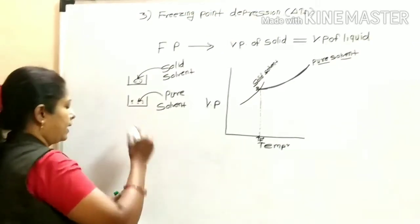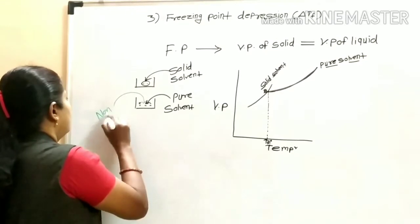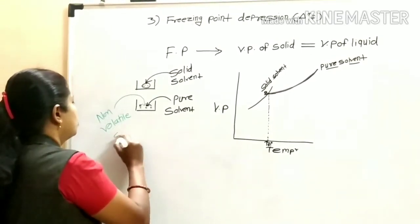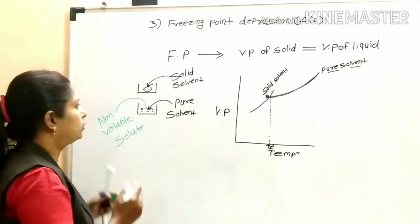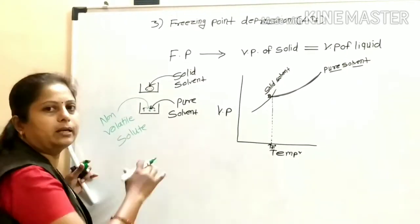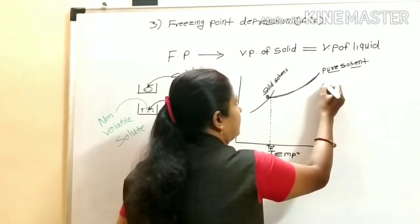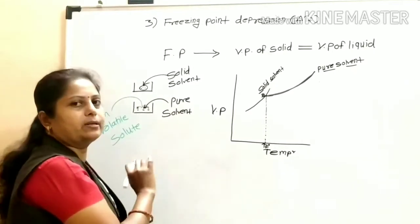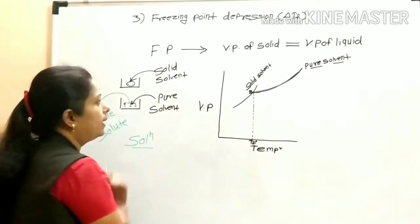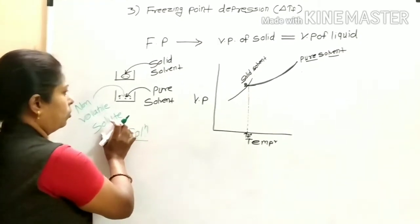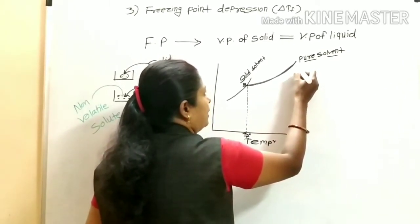When a non-volatile solute is added to the pure solvent, the molecules in the vapor phase decrease, so the vapor pressure decreases. A new curve for the solution is obtained. Adding non-volatile solute lowers the vapor pressure curve.